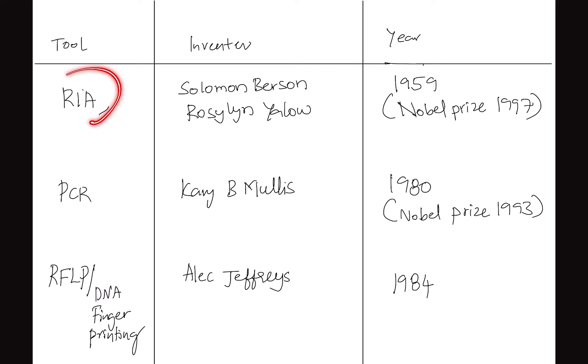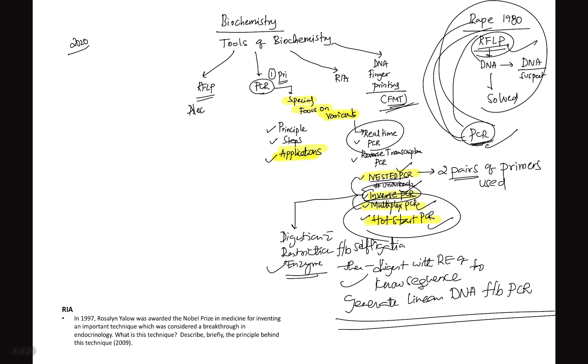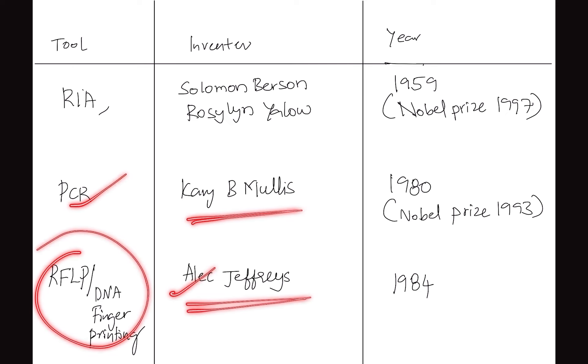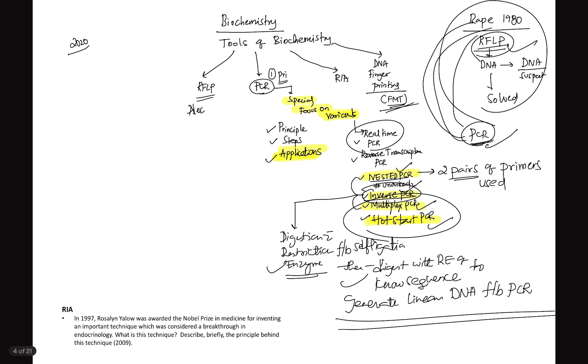Radio immunoassay or PCR or RFLP or DNA fingerprinting - if you want to write introduction, you have to start with an inventor. I could see most of the students are not giving proper introduction to these questions. If they ask you what is radioimmunoassay, you have to say it is invented by Solomon Burson and Rosalind Yalow in 1959 and they were awarded Nobel Prize in 1997. Please memorize it. In 2019 they asked: in 1997 Rosalind Yalow was awarded Nobel Prize in medicine for inventing an important technique which was considered a breakthrough in endocrinology. What is this technique? Describe briefly the principle behind this technique. Even if you know PCR, if you do not know that PCR is invented by Kary B. Mullis in 1980 and Nobel Prize was in 1993, you will not get those twin marks. These are the three scientists which you should memorize: Kary B. Mullis for PCR, Alec Jeffrey for RFLP and fingerprinting.